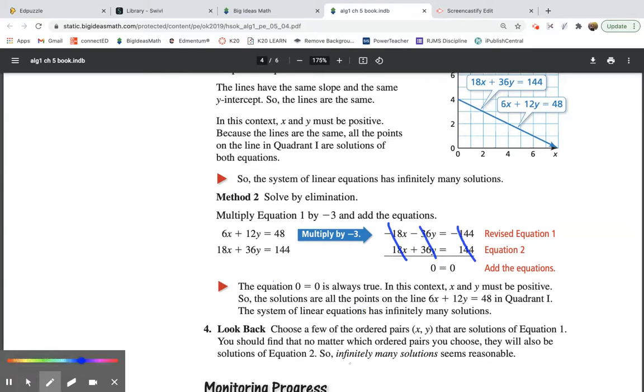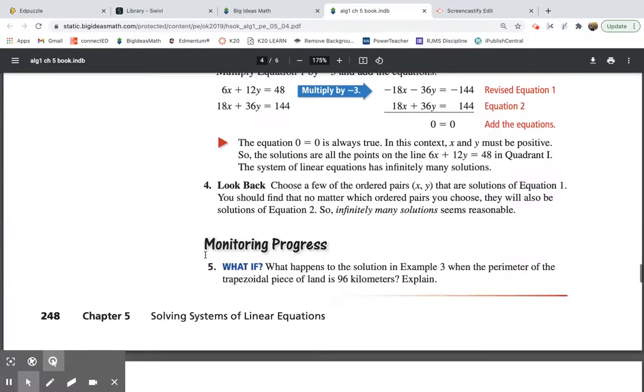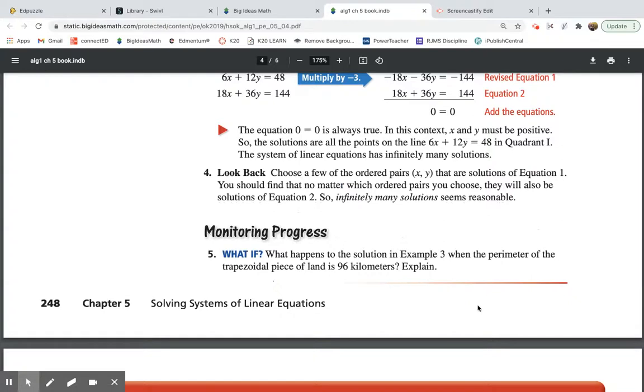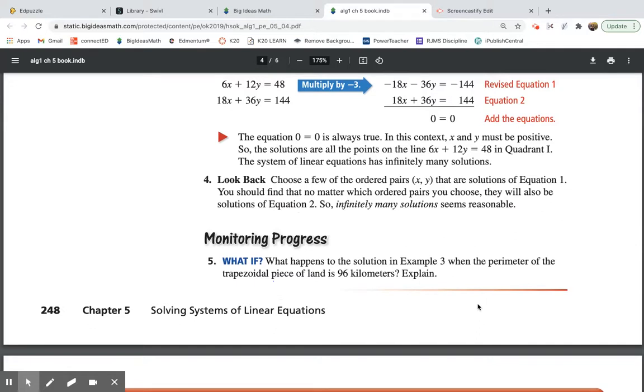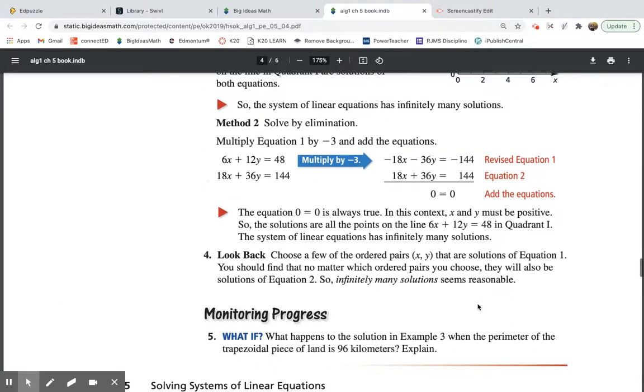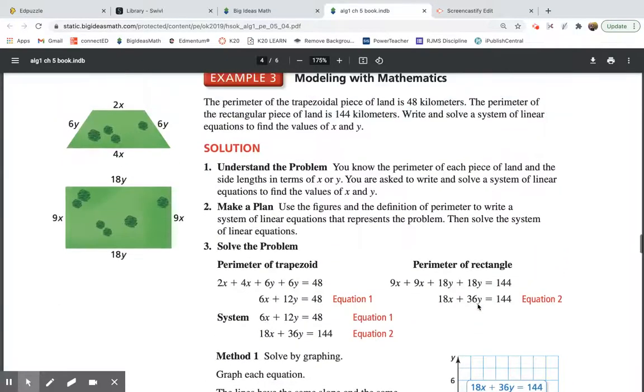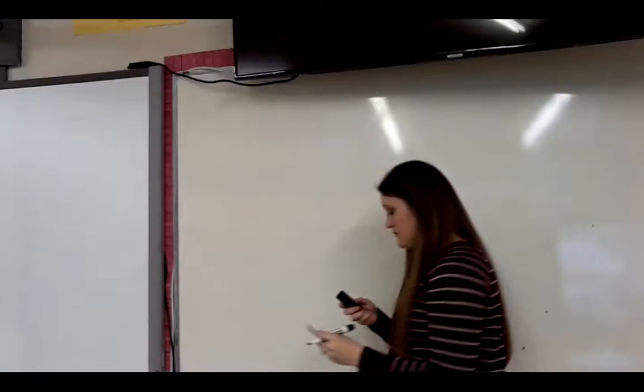Okay. So let me erase that. You're going to do number 5. It says, what happens to the solution in example 3, the one we just did? I'll scroll back up. When the perimeter of the trapezoidal piece of land is 96 kilometers. Explain. So you're going back. You're using the same problem. So you're using the same system of equations, except now the trapezoidal piece, which was this one, is no longer 48. It's now 96. So I want you to try that.